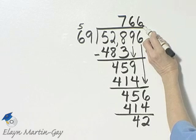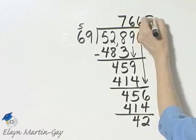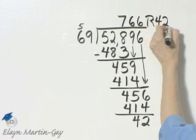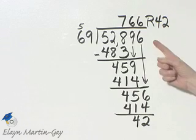And so at 766 remainder 42. How do you check? Multiply 69 times 766 and add to that 42. You should get 52,896.